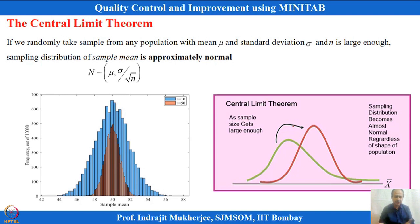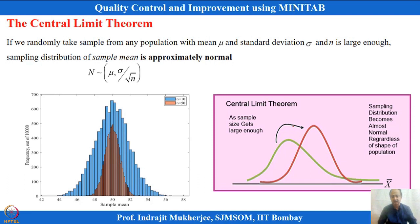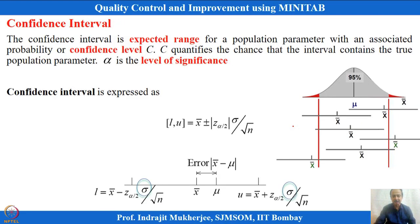That is why in quality control we take more observations to calculate the average and assume the average will tend towards normal. In control charts, we take a subgroup size of 5, take the average, plot it, and assume the average follows a normal distribution — the underlying idea being the central limit theorem.